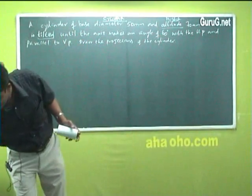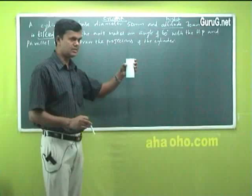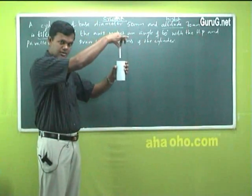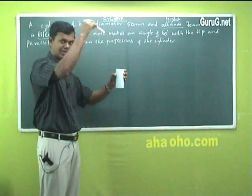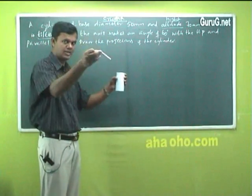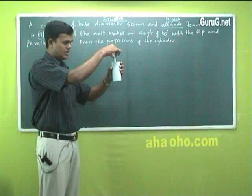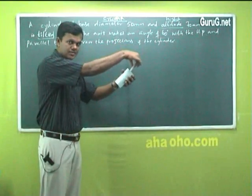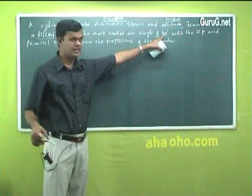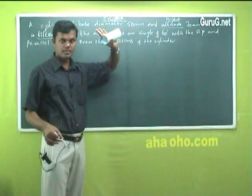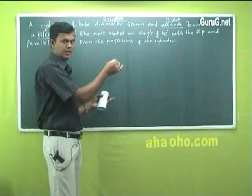So, until the axis makes an angle of 60 degree with the HP. What is that now? What is the axis for the cylinder? This is the cylinder, the axis is here, invisible axis. We cannot see that, it is invisible. The dotted line what you are writing is axis. Now, this has been tilted like this, when the axis is inclined to angle of 60 degree with HP.